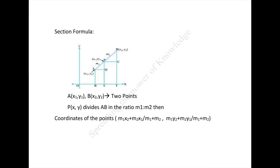Next, we will see about the section formula. See the picture. Consider any two points A(x₁, y₁) and B(x₂, y₂) and assume that P(x, y) divides AB in the ratio m₁:m₂. Then the coordinates of point P(x, y) are [(m₁x₂ + m₂x₁)/(m₁ + m₂), (m₁y₂ + m₂y₁)/(m₁ + m₂)]. This is known as the section formula.